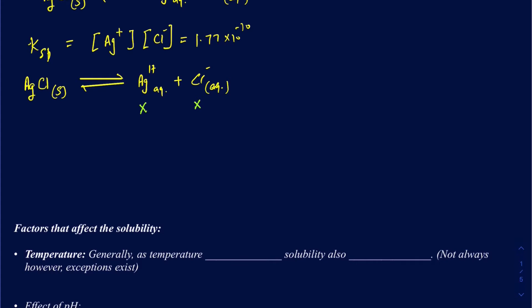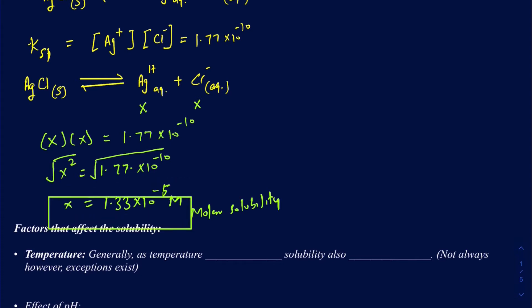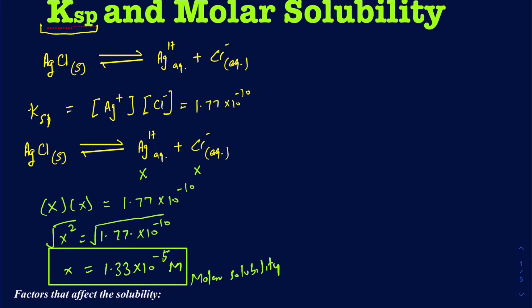Your molar solubility and the concentration of your products are not always the same. They would be the same if it's only a 1-to-1 mole ratio throughout. Going back into this Ksp expression, write X times X equal to the Ksp value of 1.77×10⁻¹⁰. Taking the square root on both sides gives X = 1.33×10⁻⁵ molar. This is your molar solubility expressed in moles per liter, and it's also the concentration of Ag⁺ and Cl⁻ because X represents both ions.